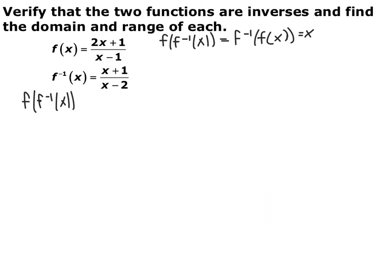We're given two functions, f(x) and f⁻¹(x), and we want to decide whether they're actually inverses of each other. To do that, we test f composed with f⁻¹ and f⁻¹ composed with f, and check if both equal x — you have to test both directions. Pause the video and compute f ∘ f⁻¹(x) and simplify completely.